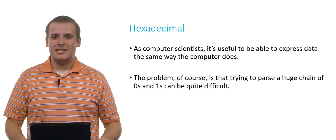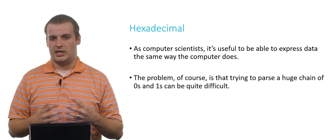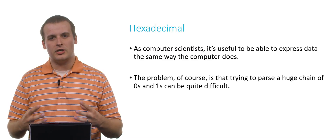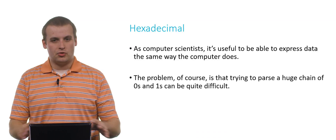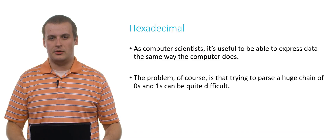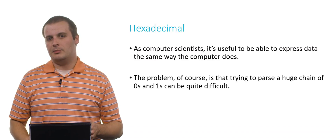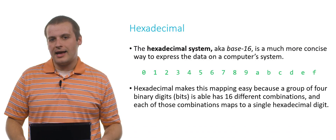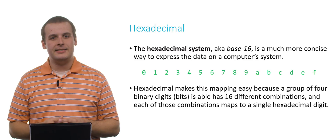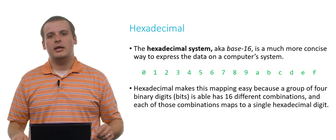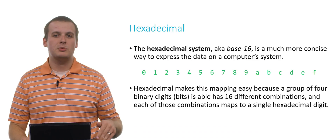Here's the thing, though. Those 0s and 1s, especially if we're being computer scientists doing a lot of programming or working with computers, we're going to be seeing a lot of binary numbers. And those 0s and 1s in large chains can be very difficult to parse. We can't just look at a string of 0s and 1s and necessarily know exactly what it is. But it's still useful to be able to express data in the same way that a computer does. And so we have this notion of the hexadecimal system, which is base 16, instead of base 10 or base 2, which means that we have 16 digits to work with instead of 10 or 2. And it's a much more concise, human-understandable way to express binary information on a computer system.